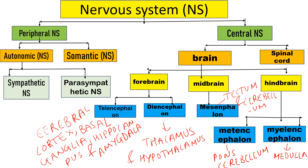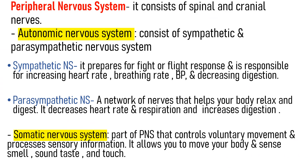This was about the Nervous System overview. We will discuss the Central Nervous System in the next session, but now we will see the Peripheral Nervous System. The Peripheral Nervous System consists of the Autonomic Nervous System and the Somatic Nervous System, and it consists of nerves. The Autonomic Nervous System consists of Sympathetic and Parasympathetic Nervous Systems. The Sympathetic Nervous System prepares for Fight or Flight Response and is responsible for increasing heart rate, breathing rate, and blood pressure, and decreasing digestion.